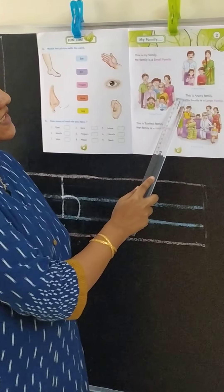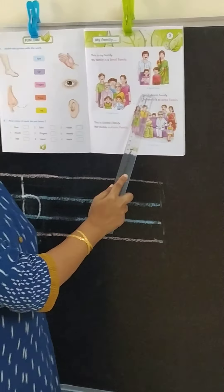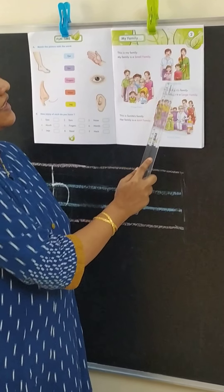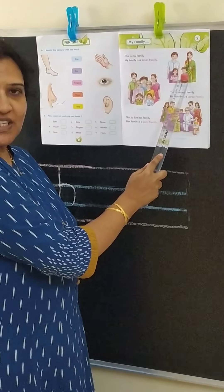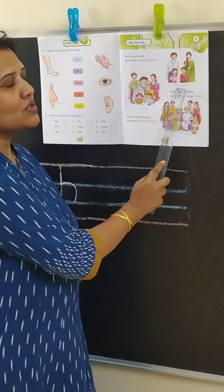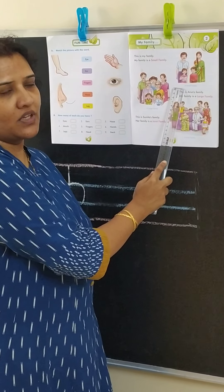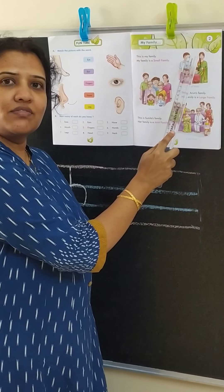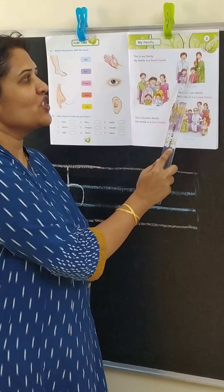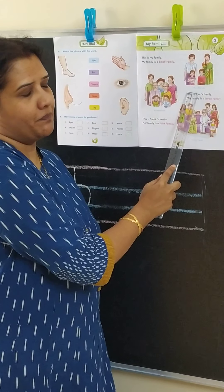Now look at this picture. How many people are there in this picture? There is mother, father and two children. So this is a small family, where there is mother, father and children.